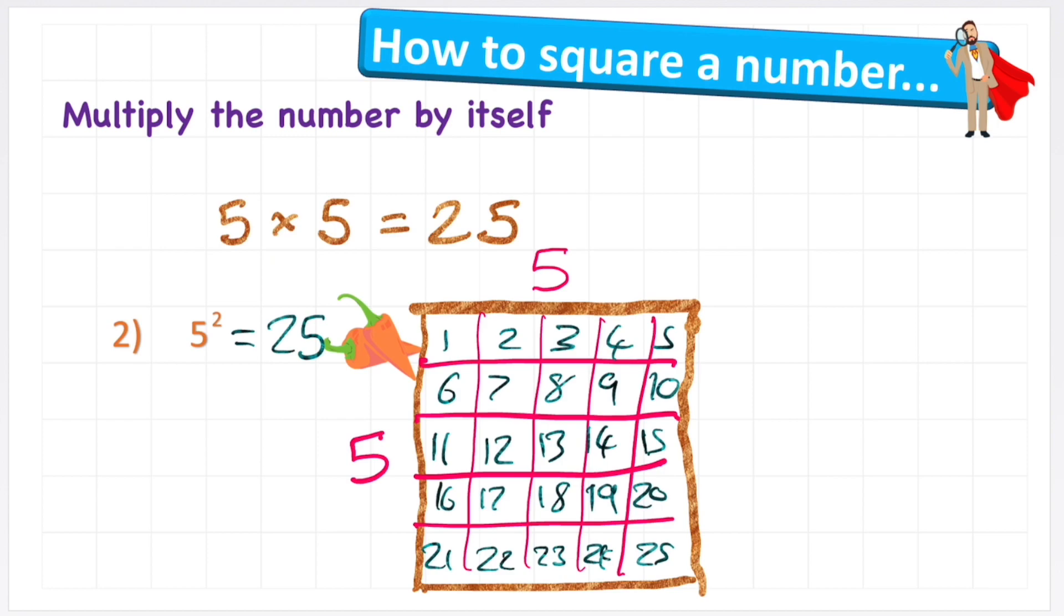So hopefully this makes sense—that 5 squared is essentially saying we get a square with length and width of 5, and we work out how many smaller squares we can chop that into using those measurements.